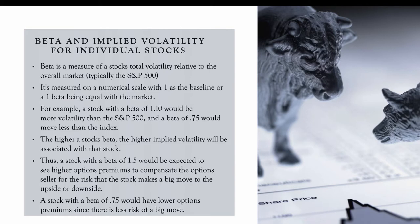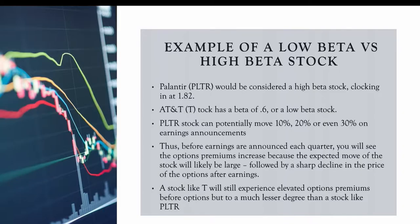A stock with a beta of 1.5, for example, would be expected to have higher options premiums to compensate the options seller for the risk that the stock makes a big move to the upside or downside. A stock with a beta of 0.75 has less risk of a big move, so implied volatility will be lower, and there's less premium to capture if you're the seller of the option.